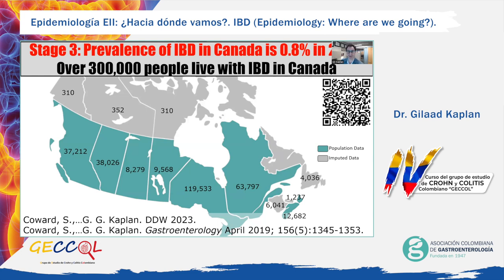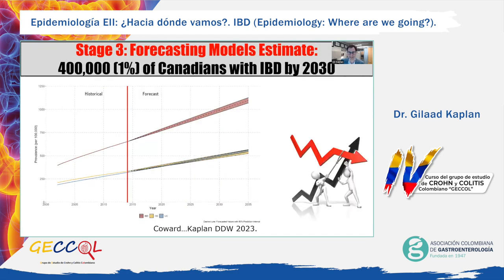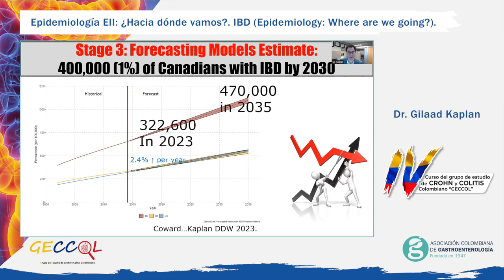The Canadian Gastrointestinal Epidemiology Consortium — we like to call ourselves CanGIEC — is a group of IBD epidemiologists who developed a population-based IBD surveillance cohort for provinces across the country, including British Columbia, Alberta, Saskatchewan, Manitoba, Quebec, Nova Scotia, and Newfoundland, comprising over 95% of the Canadian population. Data from CanGIEC has shown that the prevalence of IBD is roughly 0.8% of the Canadian population in 2023 — today over 300,000 Canadians live with IBD. Using historical temporal trend data, prevalence of IBD increased by approximately 3% per year throughout the 21st century. Forecasting models demonstrated that prevalence will climb to nearly 1% of the Canadian population by 2030, meaning our GI clinics will be caring for over 400,000 Canadians with IBD.